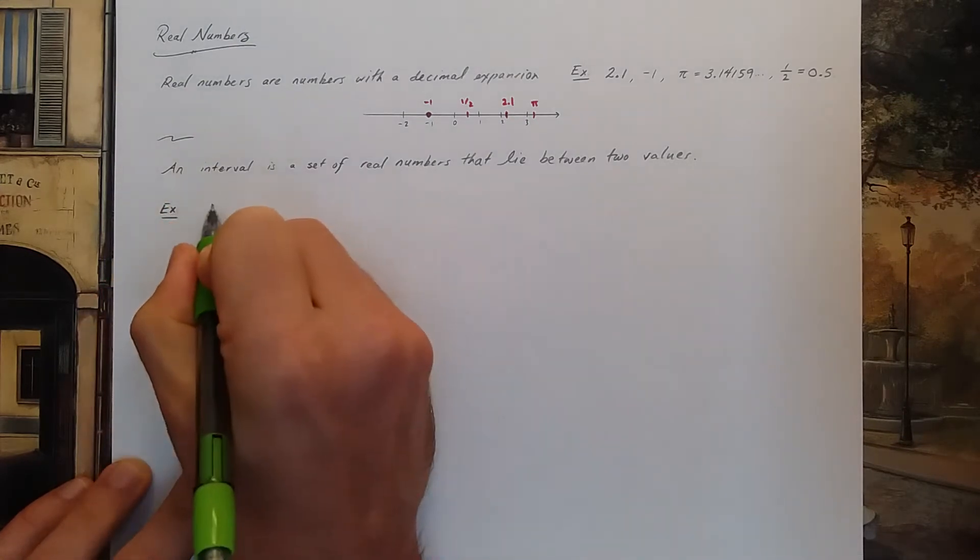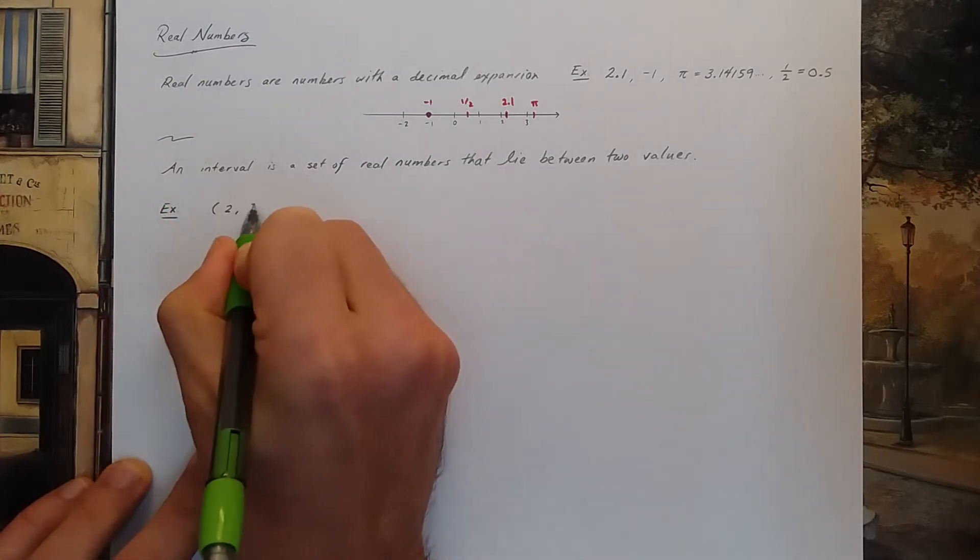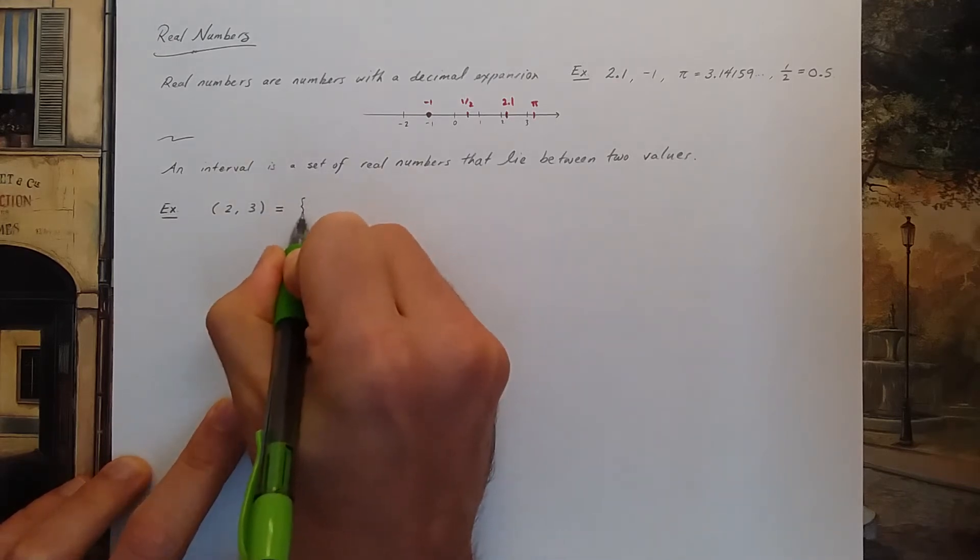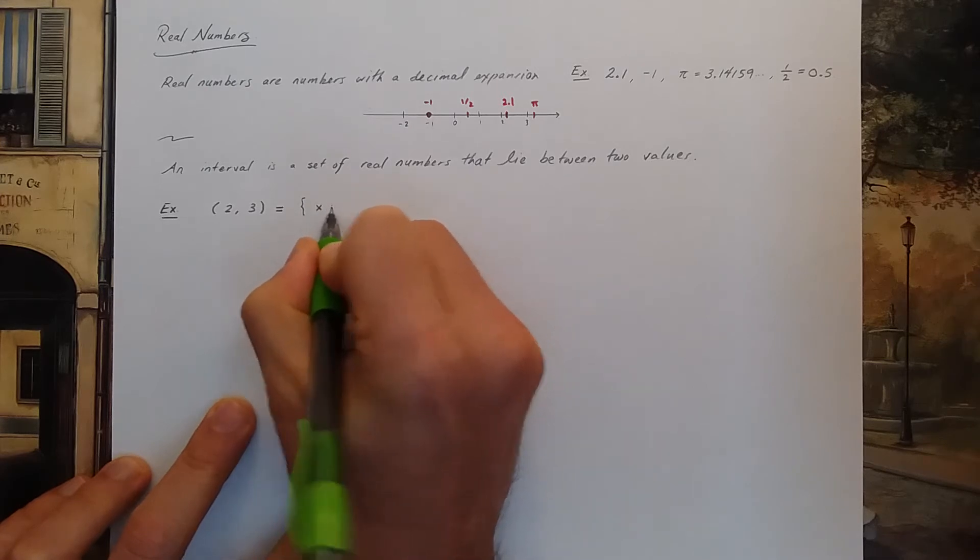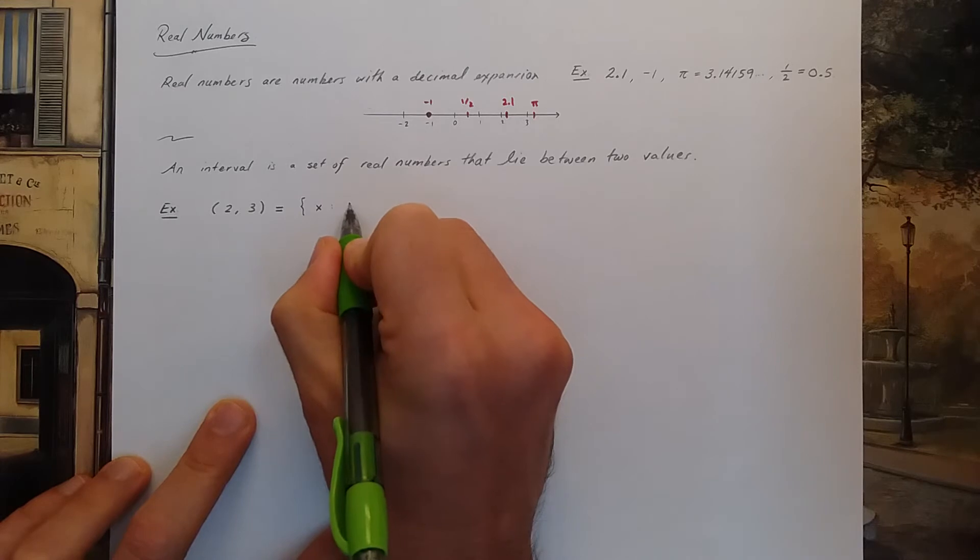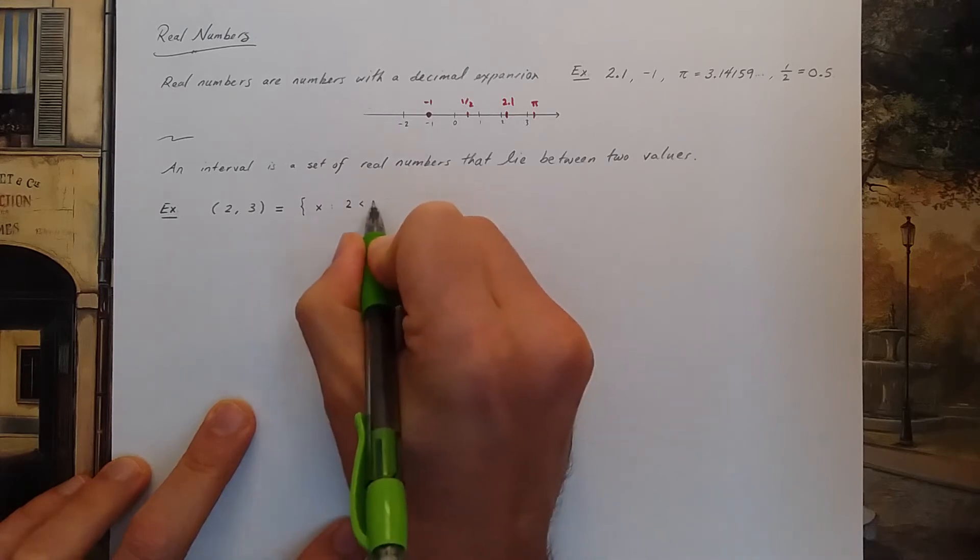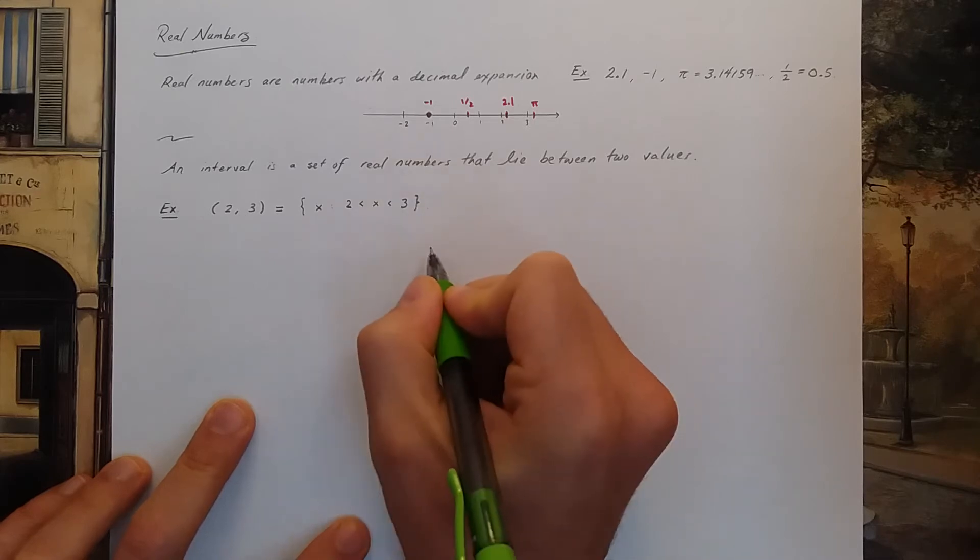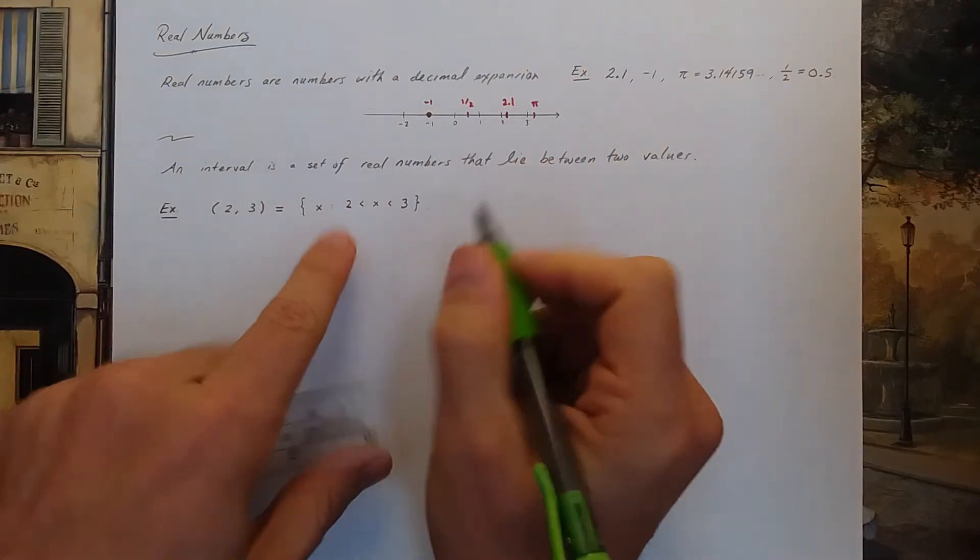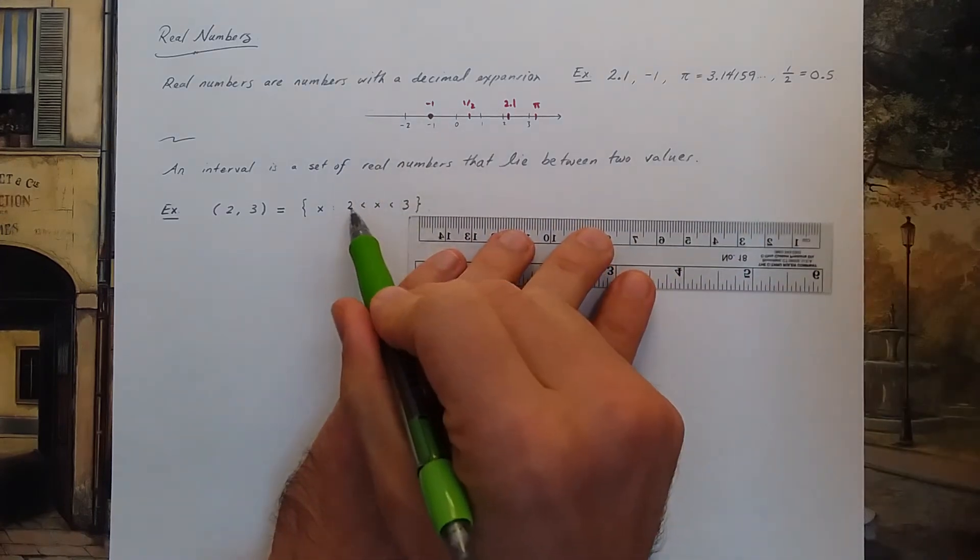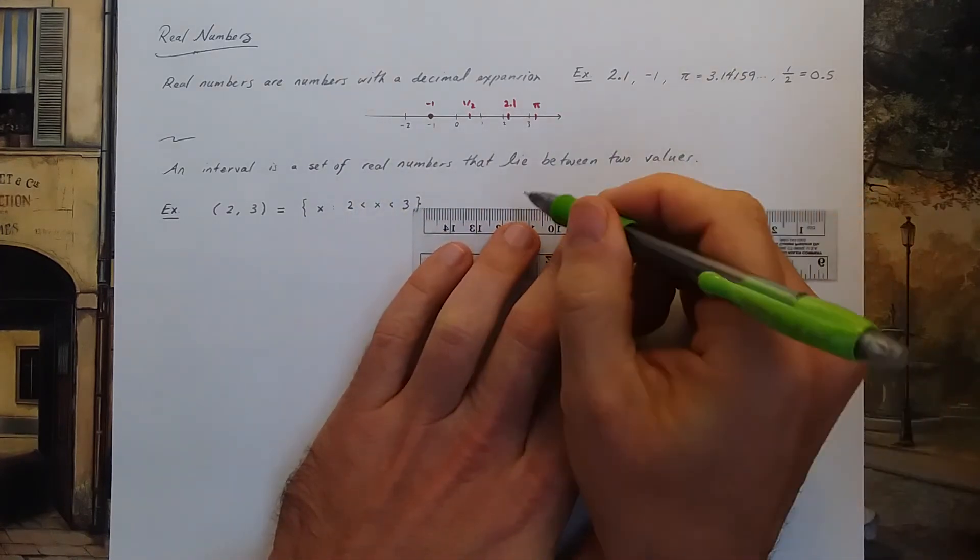An interval is a set of numbers that lie between two values. Let's see some examples. I could write down the interval (2,3). Another way to denote this interval is by saying that I have all real numbers x such that x is between 2 and 3. These are two different ways to denote the same interval.